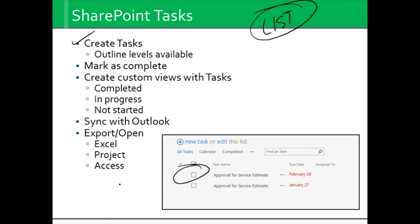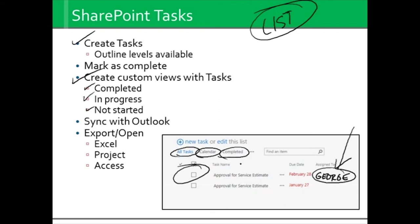You can mark tasks as complete. You can assign them to others — that's the most fun, give that one to George. You can also create custom views with tasks. Maybe you want to create a custom view that shows only when the status is complete, in progress, or not started. Whenever you create those views, this is where they appear — so these are your views, and if there's more than three, this is basically your 'more' button. You can also create a filter that says give me only George's tasks, so we can filter for just what he's up to.